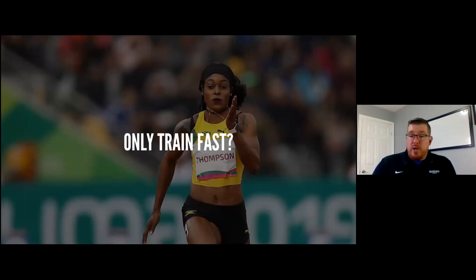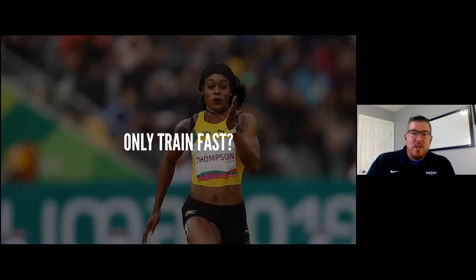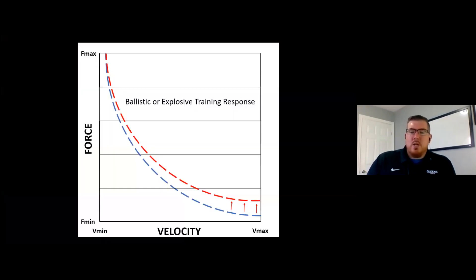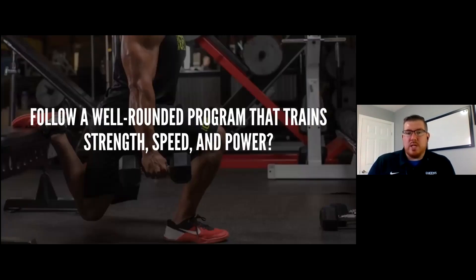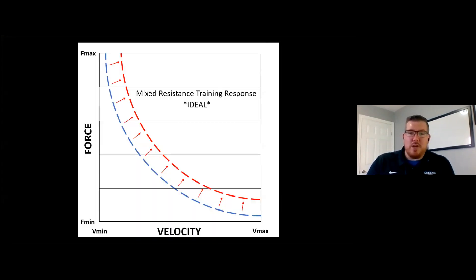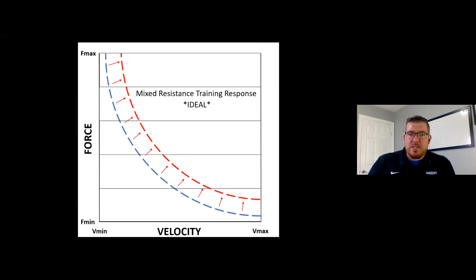If we only do jumping, sprinting, and throwing — especially relevant now with more bodyweight-only workouts — our ability to create velocity will increase. But if we want to increase overall athleticism, we want a well-rounded program training strength, speed, and power. Ideally we get a shift of the force-velocity curve to the right, meaning both force production and velocity increase, and subsequently power increases.